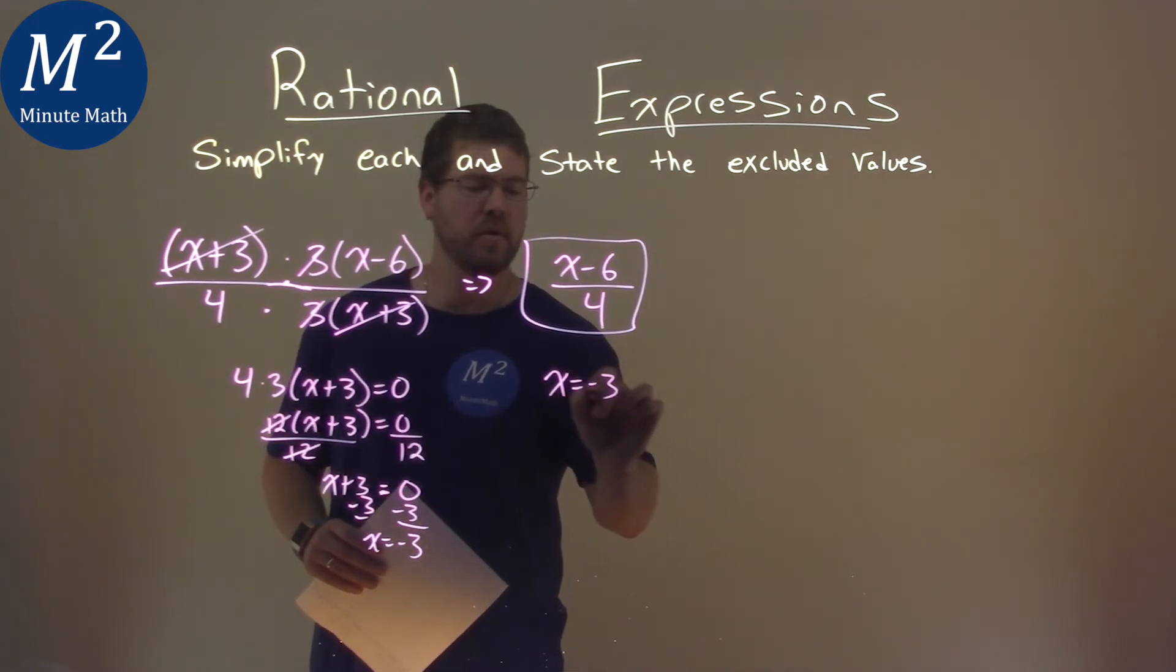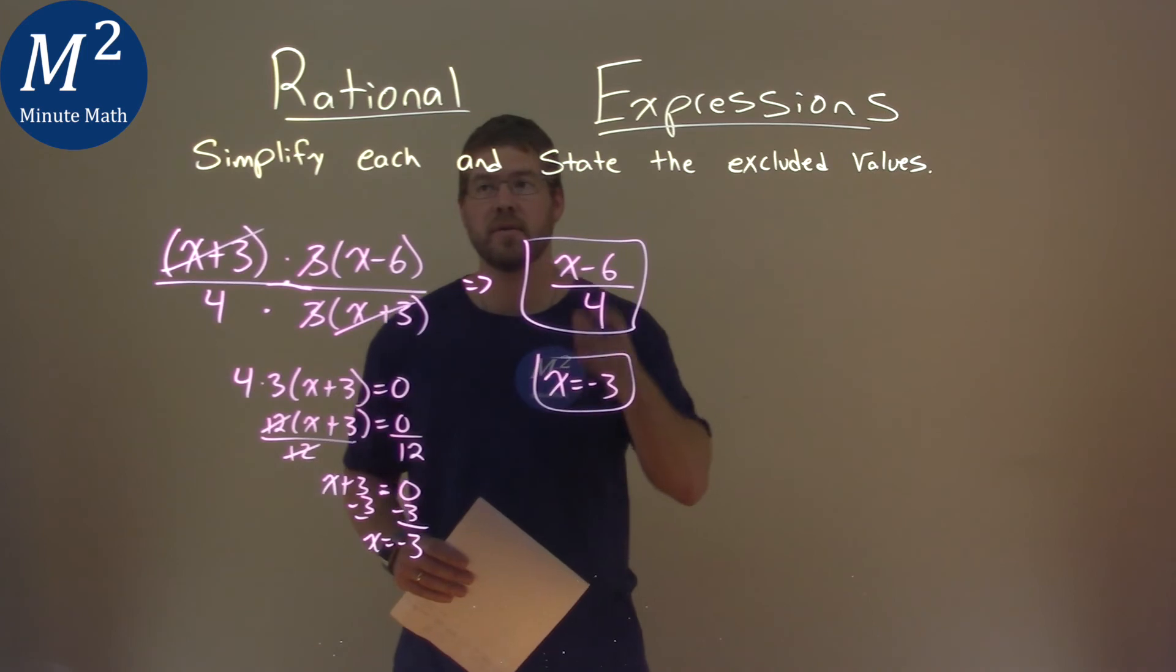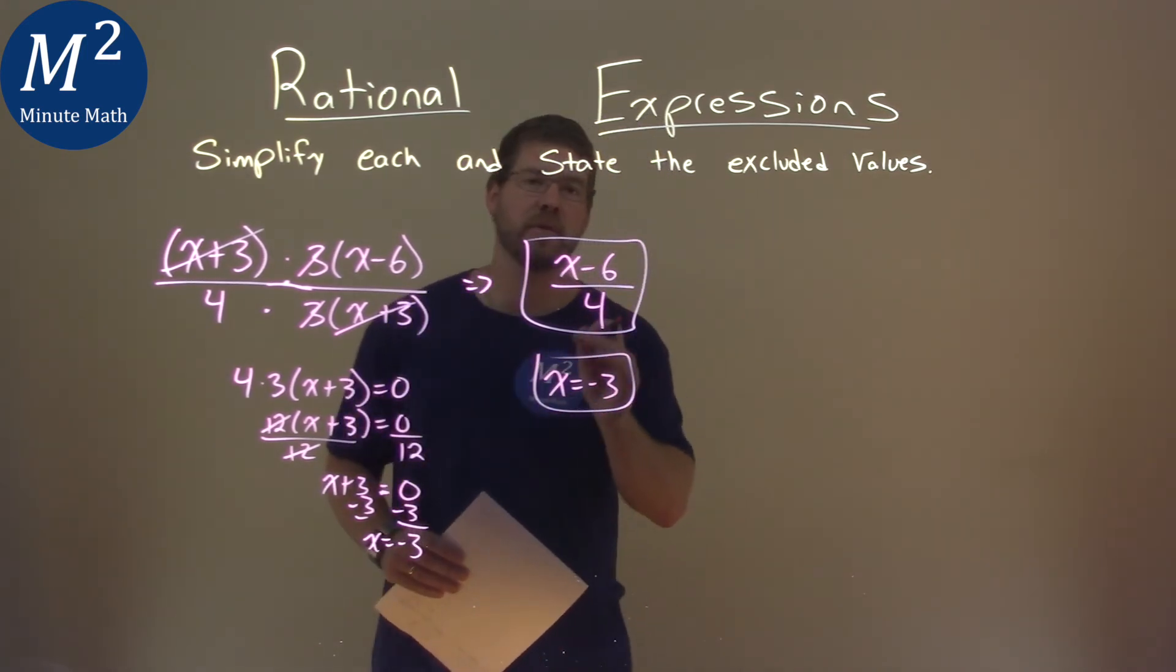So our final answer is x minus 6 over 4 is our simplified expression, and negative 3 is our excluded value.